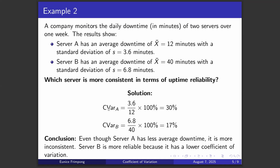Going forward I'll be calling the coefficient of variation the CV. Let's find the CV of Server A and the CV of Server B. For Server A: standard deviation of 3.6 divided by the mean of 12 times 100% gives us 30%. For Server B: standard deviation of 6.8 divided by the mean of 40 times 100% gives us 17%. So the CV of Server A is 30% and the CV of Server B is 17%.